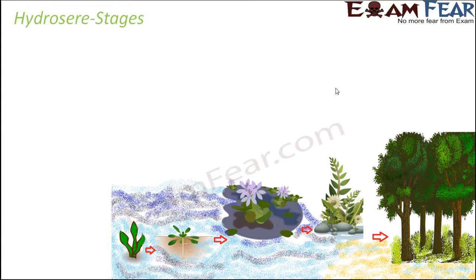Let us discuss the various stages of hydrosere. First, let's understand what is sere. Sere refers to the biotic succession — the stages of development from the pioneer stage to the climax community. When the first living organisms start to develop in a damaged ecosystem, all the stages from the pioneer stage to the climax community are given the term sere.